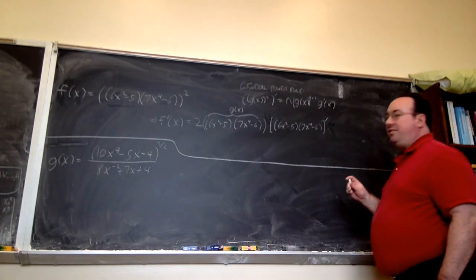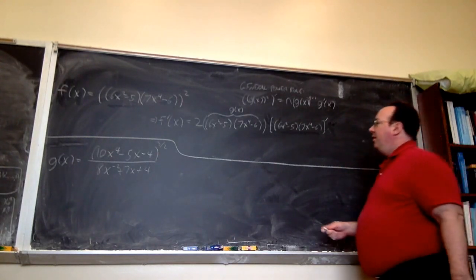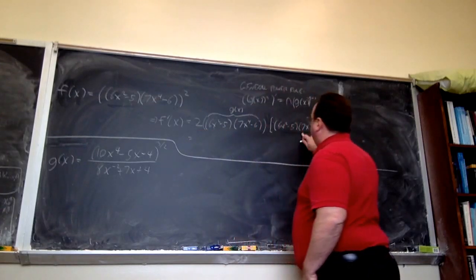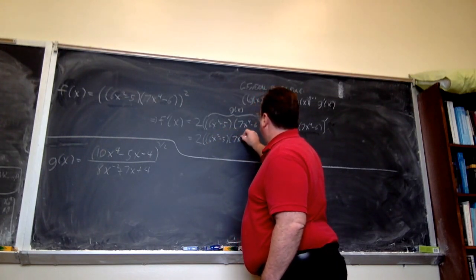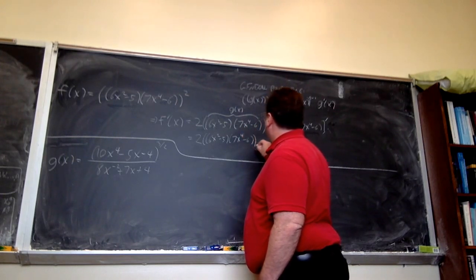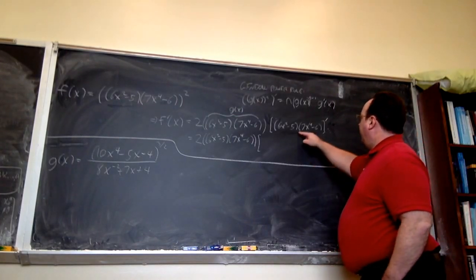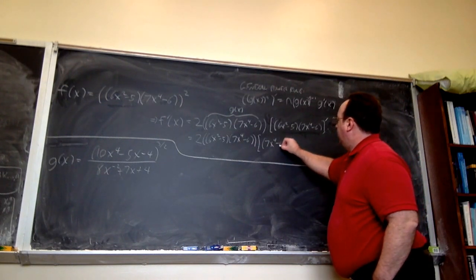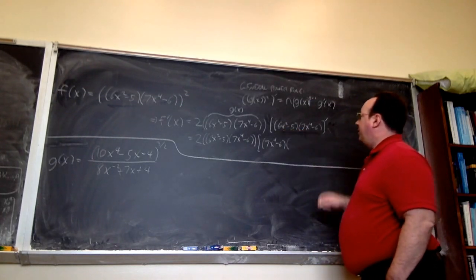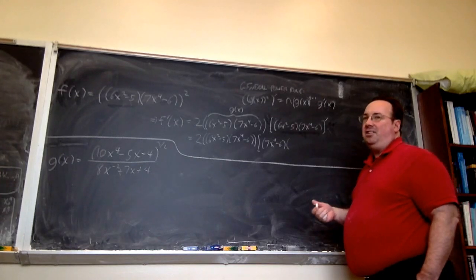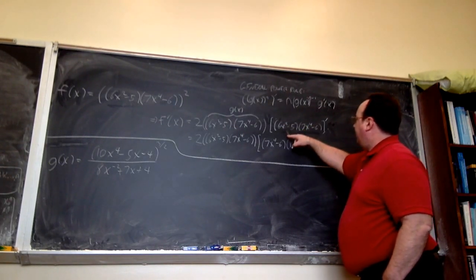I'm not finished yet — I still have to take the derivative of what's inside, and what's inside is a product. So we must use the product rule. Using square brackets to distinguish parentheses: the product rule gives us the second function times the derivative of the first. The derivative of (6x² − 5) is just 12x, since the 5 is constant and its derivative is 0.